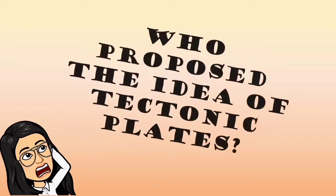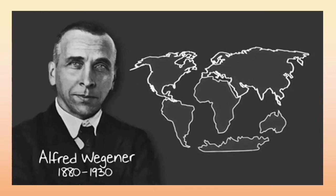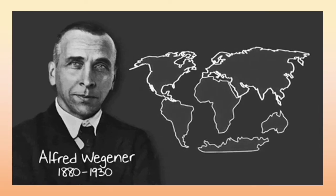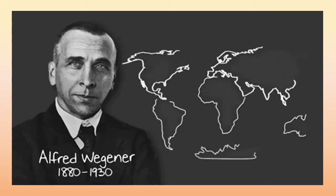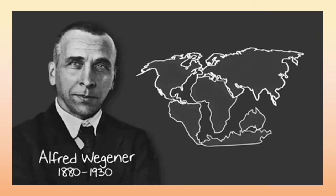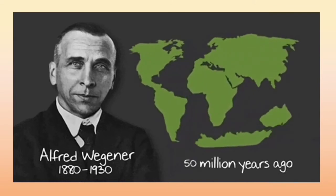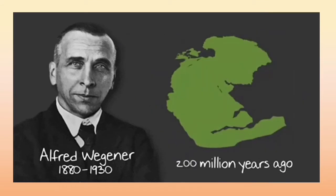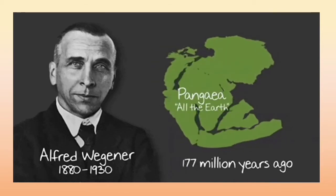But who proposed the idea of tectonic plates? It was proposed by a German geophysicist named Alfred Wegener. He said that the continents fit together like pieces of a jigsaw puzzle. This theory is called the theory of plate tectonics, which contains the key principles that can explain the tectonic and geologic processes that occur on Earth. He also theorized that in the past, the continents were once joined as a single supercontinent called Pangaea. This theory was ignored for many years, but as science and technology advanced, they collected evidence to support that theory, and that's how the idea of plate tectonics was created.